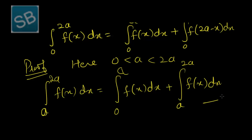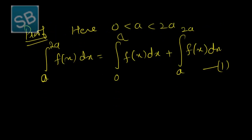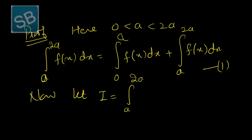Our aim now is to transform the integral from a to 2a of f(x) dx into the integral from 0 to a of f(2a minus x) dx. So we will work on this second part. Let I equal the integral from a to 2a of f(x) dx.